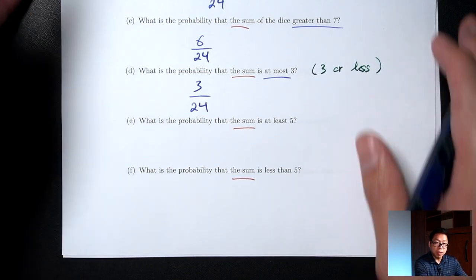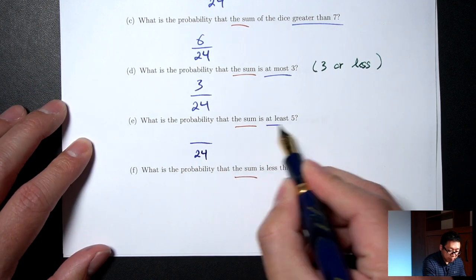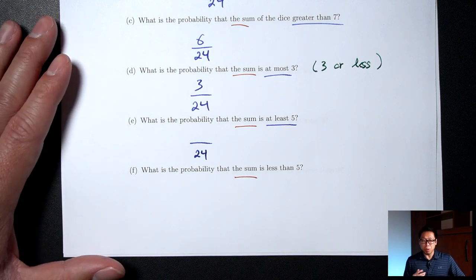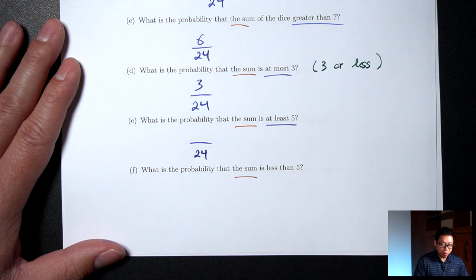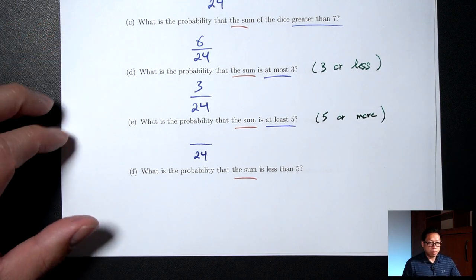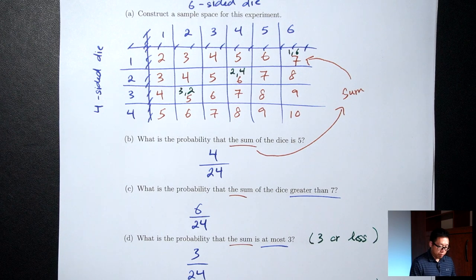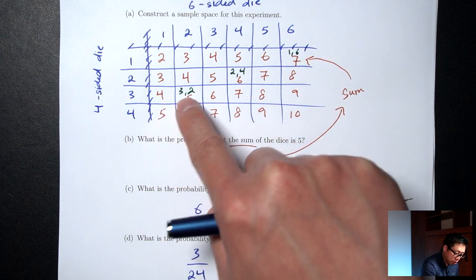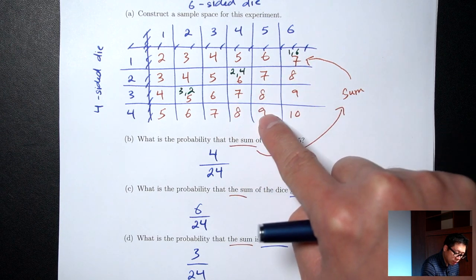Part E: what's the probability that the sum is at least 5? Bottom is 24. At least 5 means 5 or more — I remember this because you have to be at least 21 to buy alcohol, meaning 21 or more. So at least 5 means 5 or more. That includes all the 5s, 6s, 7s, 8s, 9s, and 10s in the table: counting those gives 18 outcomes. Probability is 18/24.